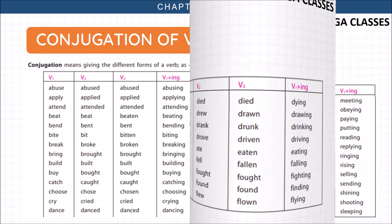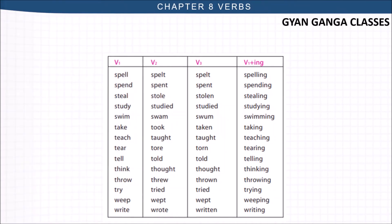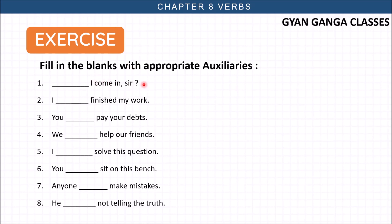Now let us do a quick exercise about using the helping verbs. I dash finished my work. Finished is past tense, so which helping verb? Had. You dash pay your debts. You must pay your debts. We dash help our friends. We will help our friends. I can solve this question. You may sit on this bench. Anyone could make mistakes. He is not telling the truth. So we are using helping verbs in all these sentences.